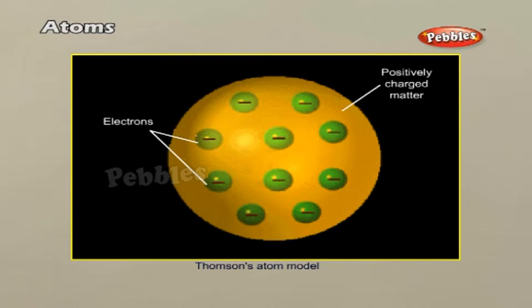The first model of the atom was proposed by J.J. Thomson in 1898. According to this model, the positive charge of the atom is uniformly distributed throughout the volume of the atom and the negatively charged electrons are embedded in it like seeds in a watermelon.